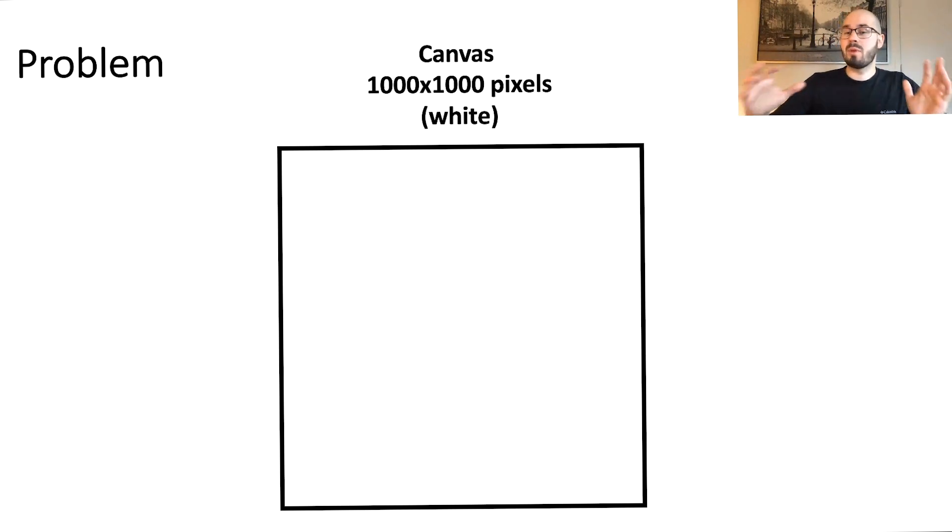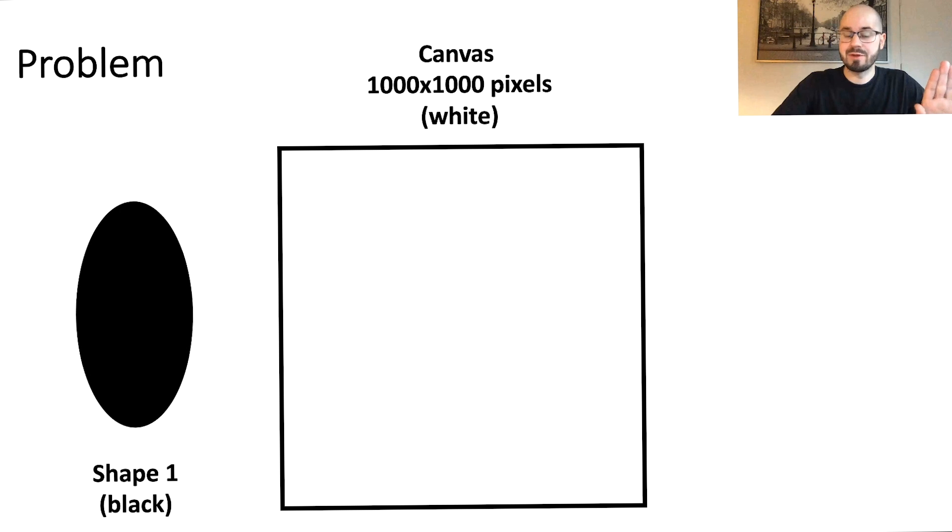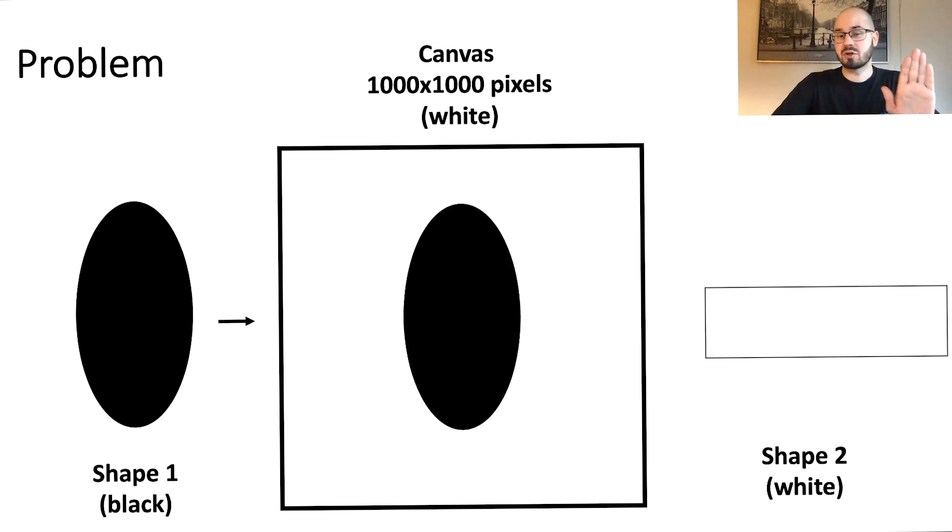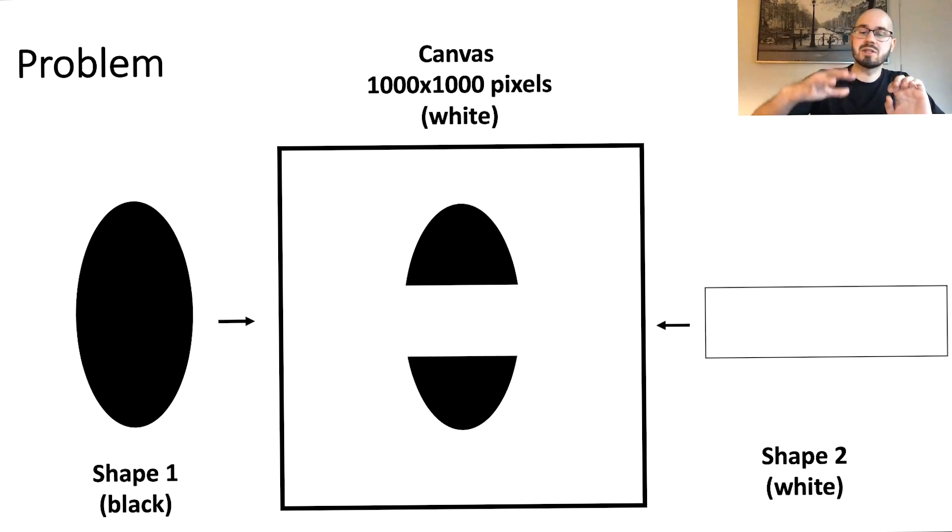So now they are combined as follows. We have a 1000x1000 pixel canvas which is initially completely white and we have a black shape here, an ellipse, and we have a white shape here, a rectangle. Then we take the black shape and draw it centered on our canvas and secondly we take the white shape and draw it on top also centered. The result is a canvas with black and white pixels.